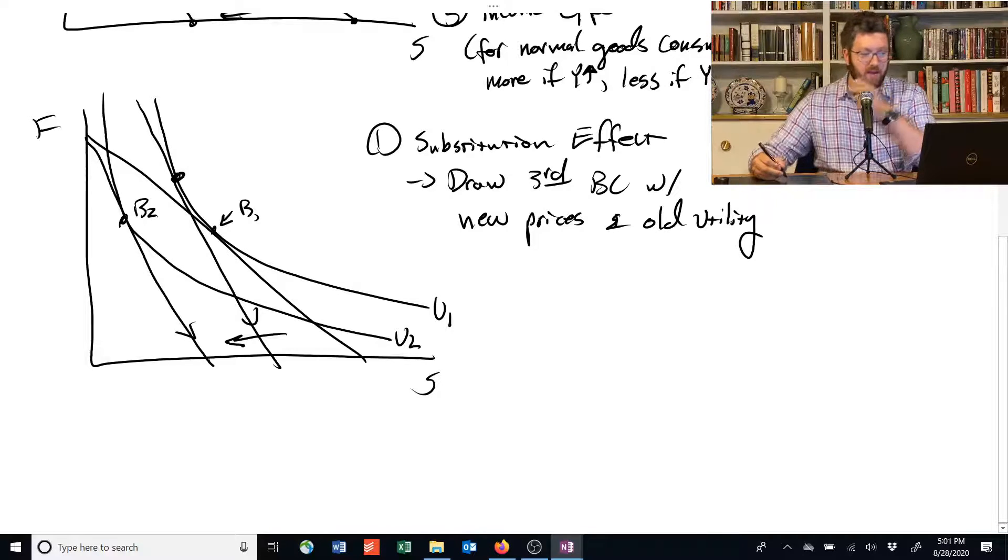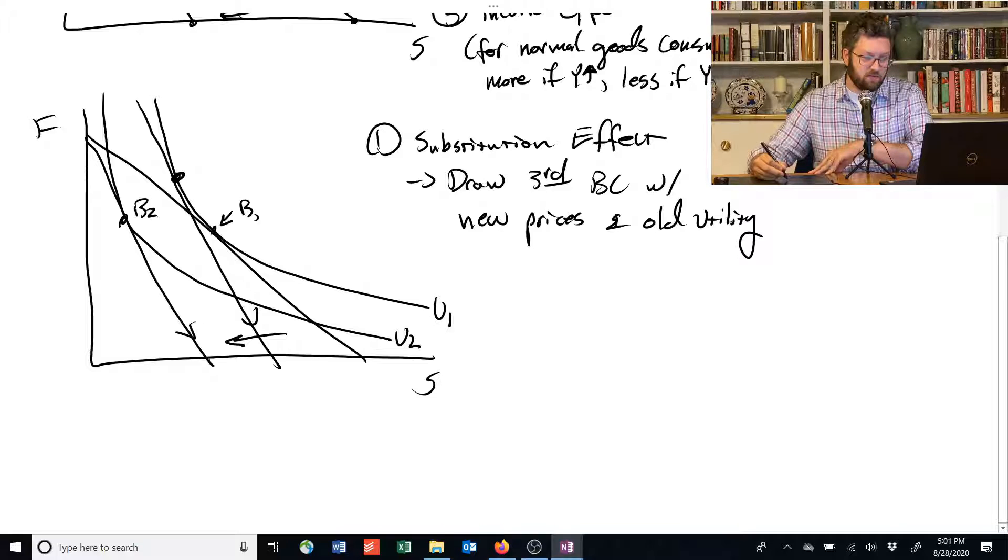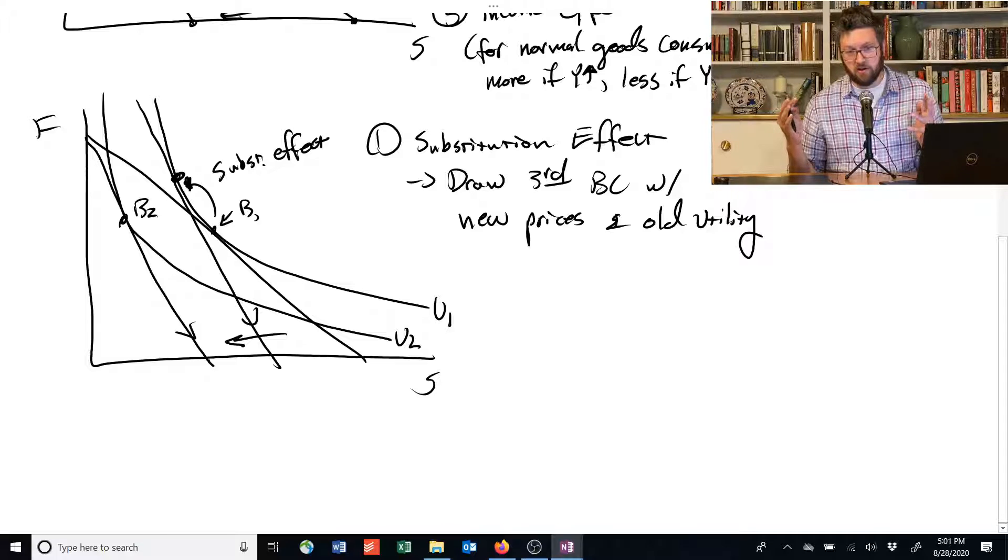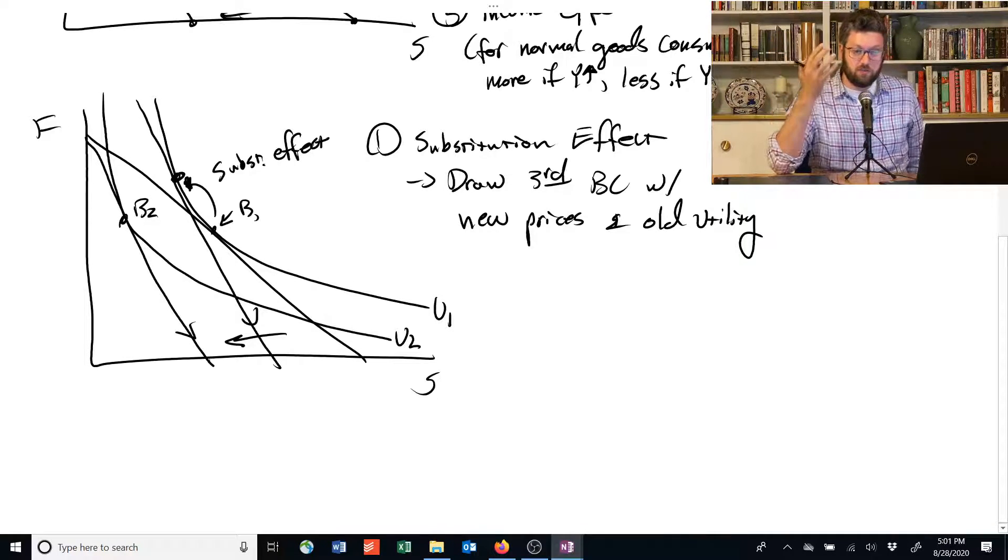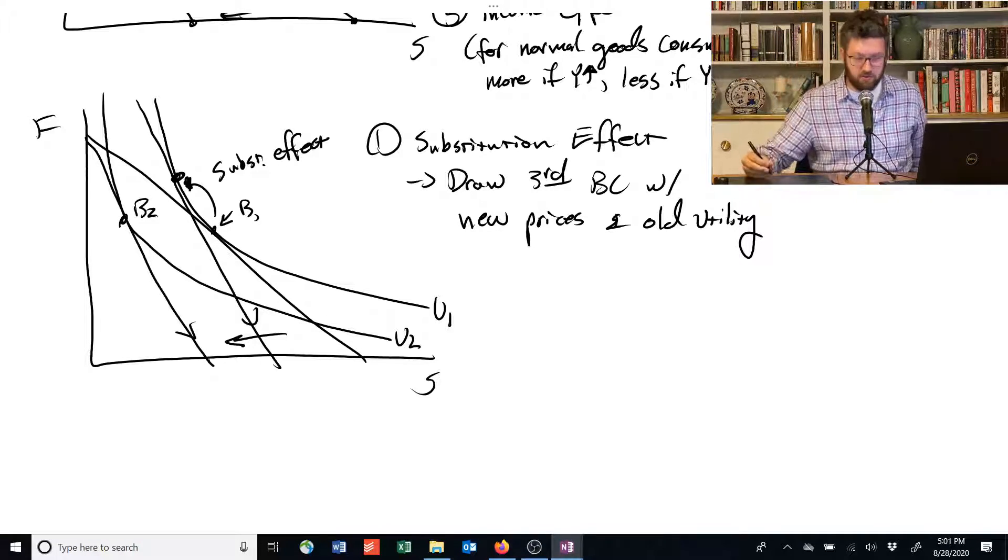And you can see that where this point is tangent, this person is going to, the movement from here to here is called the substitution effect. And you can see that we've fled from the expensive good shelter towards the cheap, relatively cheaper good food. So the amount of food consumed has gone up and the amount of shelter consumed has gone down due to the substitution effect.